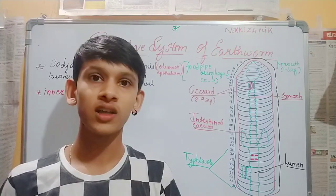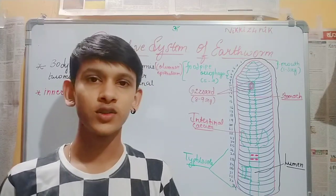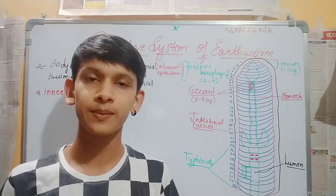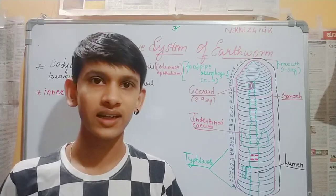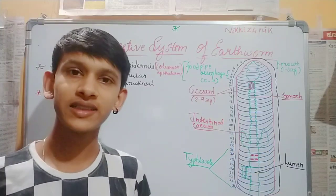We will digest food, absorb food, and derive nutrients from food. We generally know the Earthworm as Pheretima Posthuma and Lumbricus terrestris. These are the scientific names which are generally found in India.